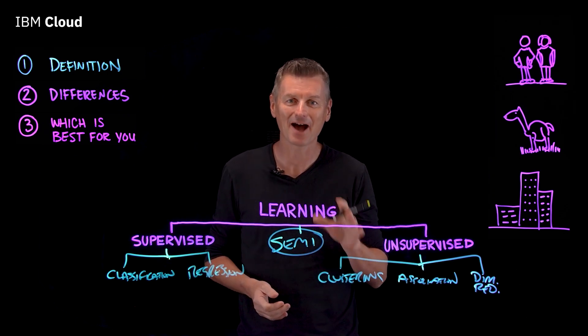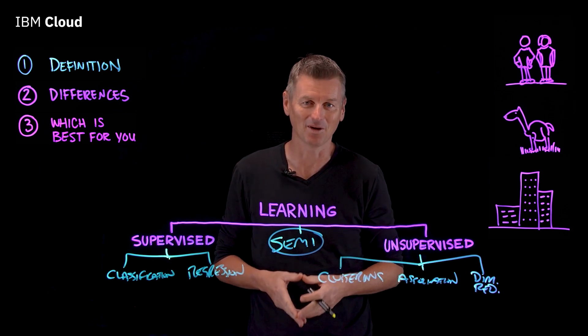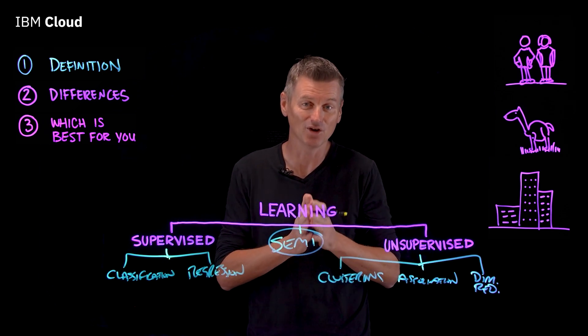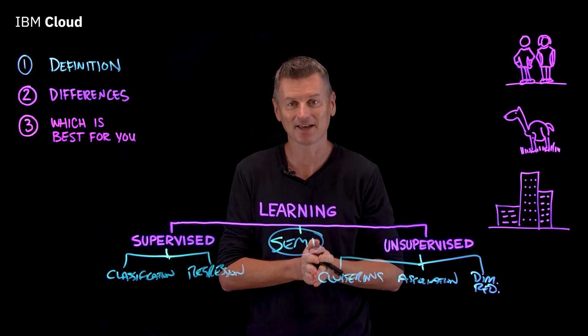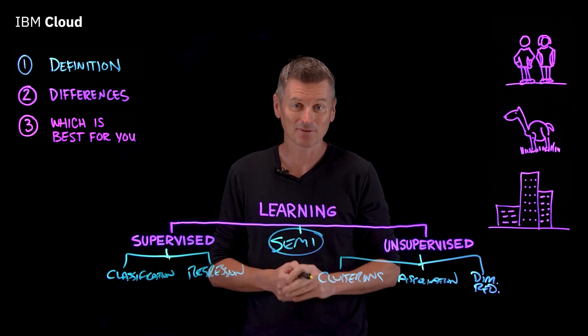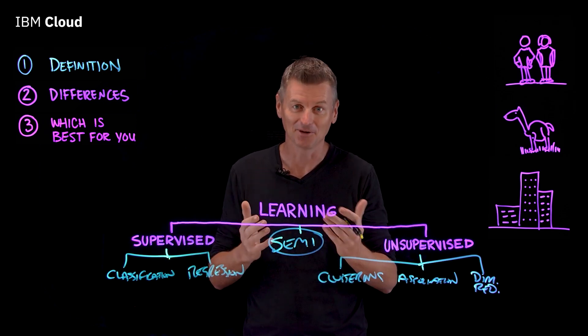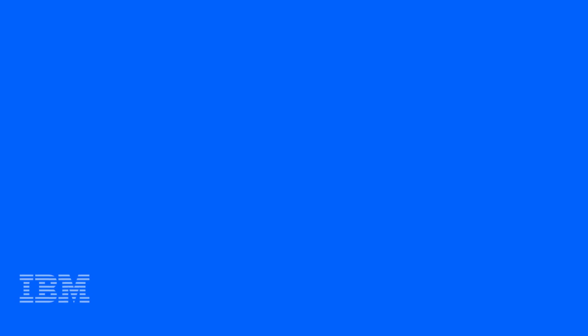Machine learning models are a powerful way to gain the data insights that improve our world. The right model for your data depends on the type of data you have and what you want to do with it, and the choice between supervised and unsupervised learning is only the first step. If you have any questions, please drop us a line below. If you want to see more videos like this in the future, please like and subscribe. Thanks for watching.